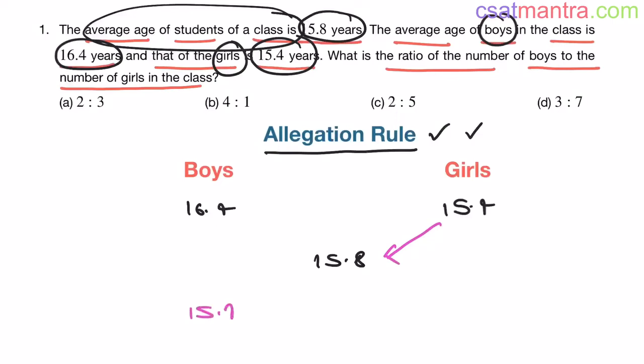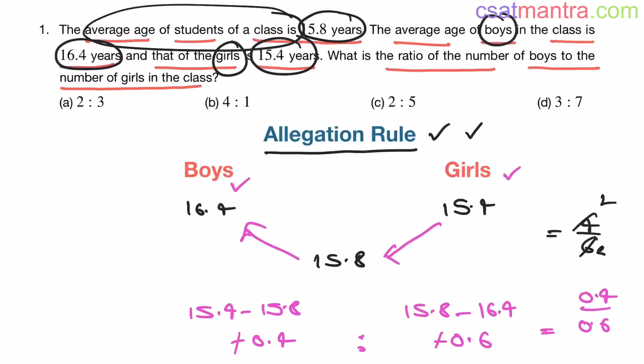Now how do you apply allegation rule? From here to here, subtraction 15.4 minus 15.8. From here to here, 15.8 minus 16.4. This is minus 0.4, this is minus 0.6. So boys and girls will be in this ratio. Minus minus gets cancelled out, 0.4 by 0.6 which is 4 by 6. 2 divides both, giving us 2 by 3. So our answer is A.